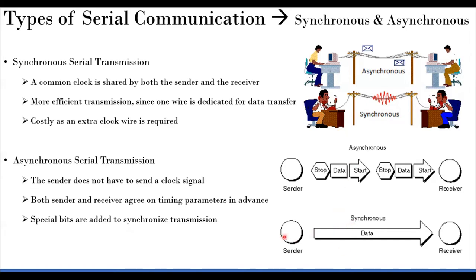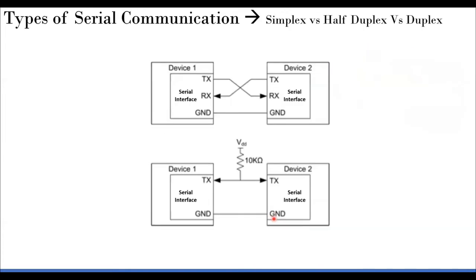More technically: in synchronous transmission, you transmit data and a clock provides synchronization. For asynchronous, the receiver needs to identify a start, a stop, and the data bits in between. To summarize: synchronous uses a clock, asynchronous does not, and without a clock there must be some handshaking mechanism for synchronization.